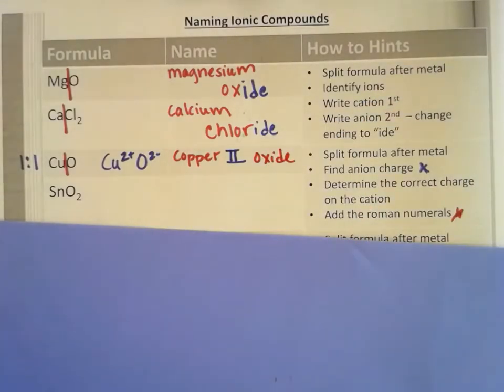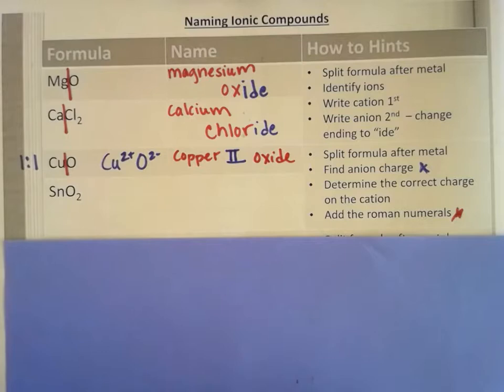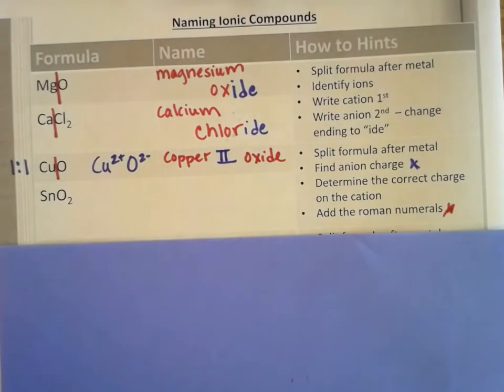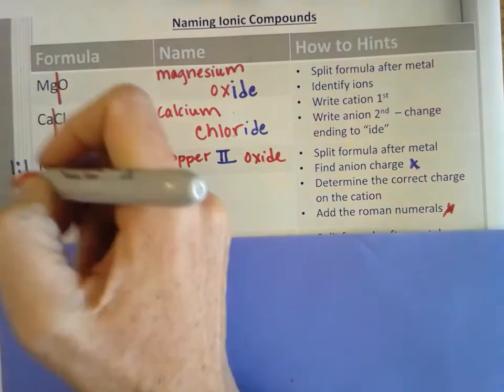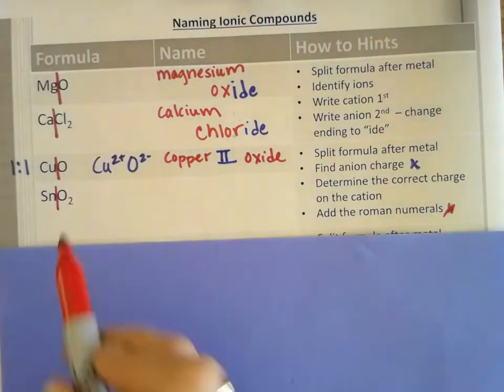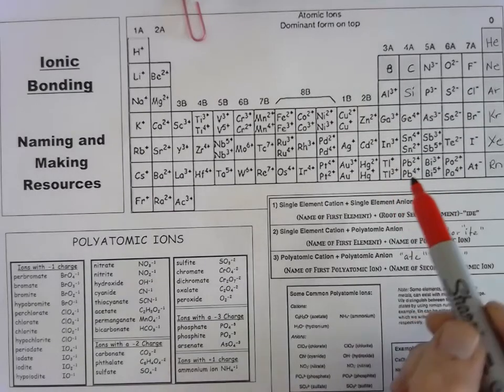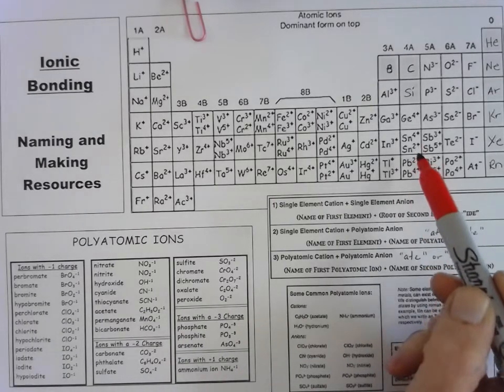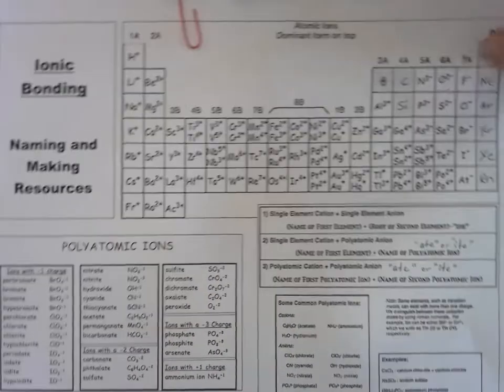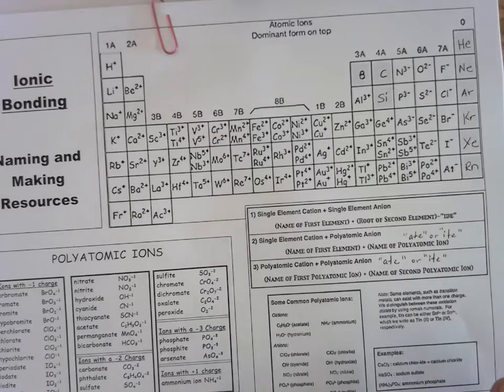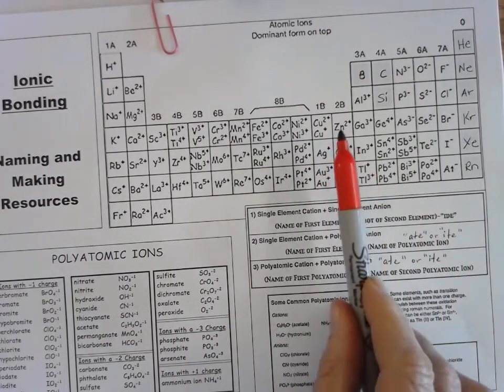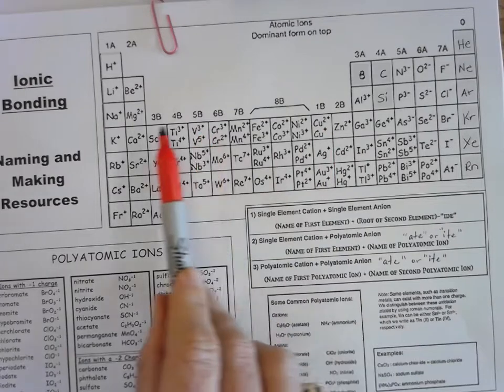Let's look at the next one. Sn O2. And again, if we take a look at this one, tin has multiple options. The way you know if you need to figure out the anion first is if the metal is in the D block. See how the D block or the transition metals have quite a few? Or this area down here underneath the stair step.